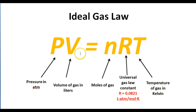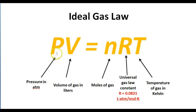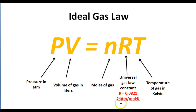When we work with the Ideal Gas Law, we're working with problems that involve the pressure of a gas, the volume of a gas, the number of moles of gas, and the temperature of gas. We should always work with pressure in atmospheres, volume in liters, moles for n, and temperature in Kelvin. R, the universal gas law constant, is always equal to 0.0821 liters times atmospheres over moles times Kelvin.